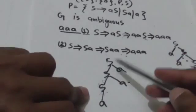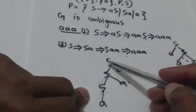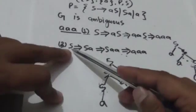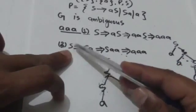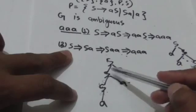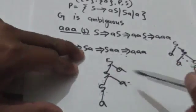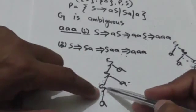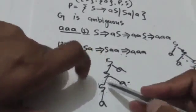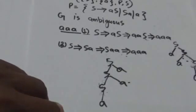This is the derivation tree for this second leftmost derivation. S is the root node and start symbol. Here I applied the production rule S derives SA, so the children of this root node S will be S and A from left to right. Then to that child S, I applied the production rule S derives SA, so its children will be S and A from left to right. Finally, the remaining S derives A. This is the derivation tree corresponding to this second leftmost derivation.